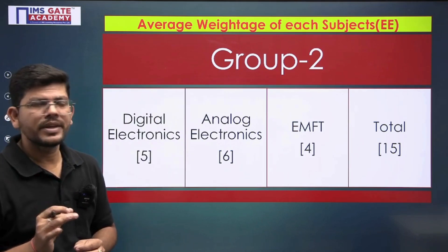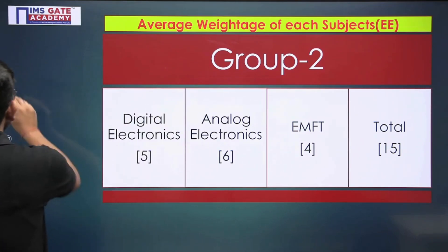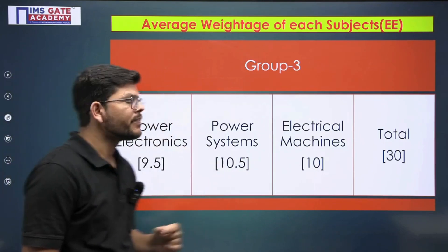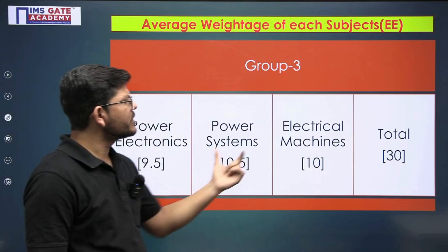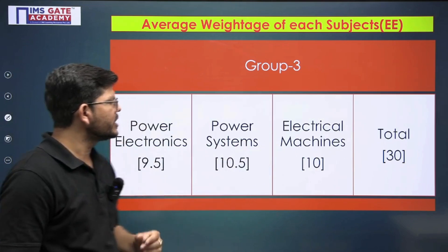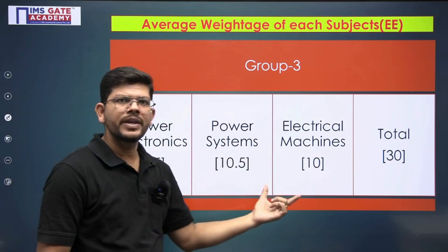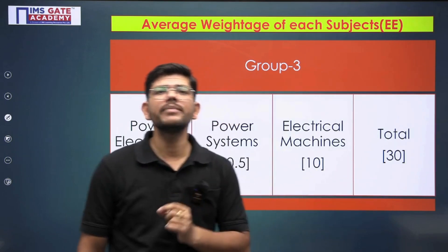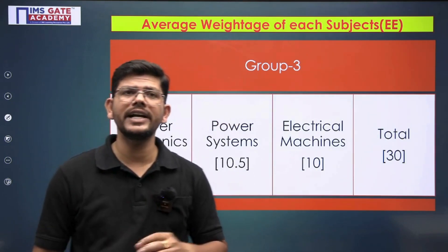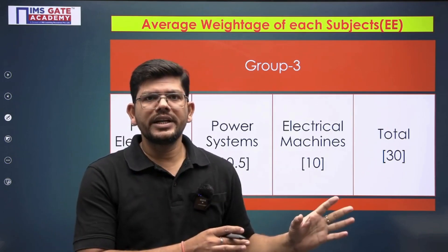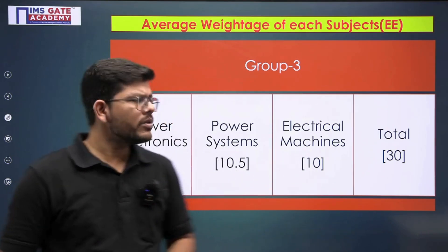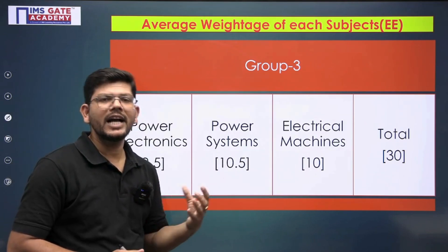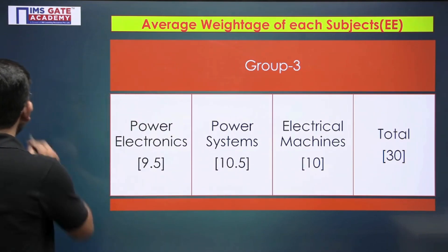Group three contains the core subjects: Power Electronics, Power Systems, and Electrical Machines. Together they carry approximately 30 marks, making this the most decisive group for your GATE performance. Try to prepare this group as thoroughly as possible, as it will largely determine your final result.